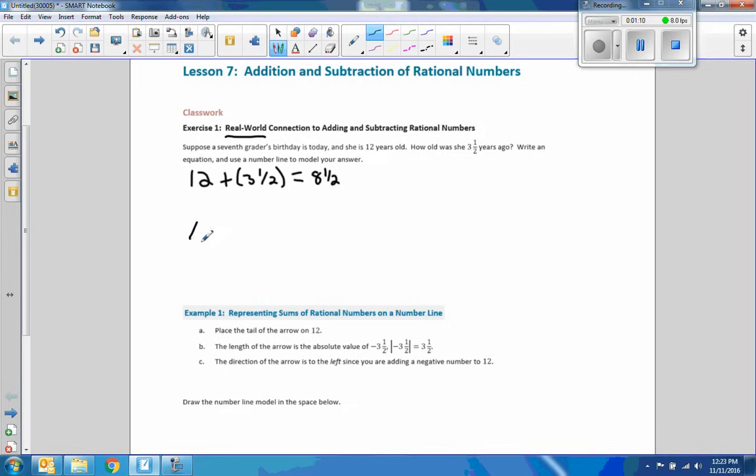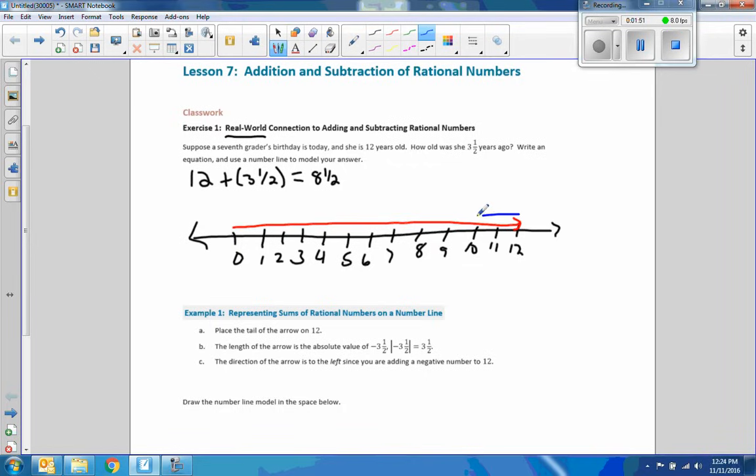In order to do this on a number line, 12 here, 11, 10, 9, 8, 7, 6, 5, and so on. 4, 3, 2, 1, 0. I'm starting my number line at zero here because there's no such thing as negative eight. So, if you're born, you're at zero. So, this seventh grader's 12 now. What the question is asking is, how old was she one, two, three, and one-and-a-half years ago? And the answer is 8.5.